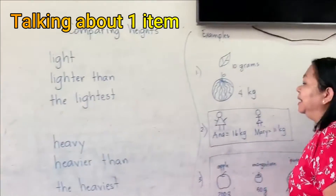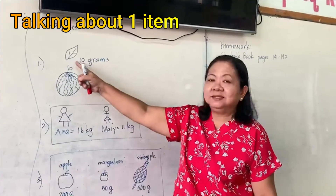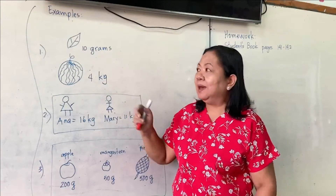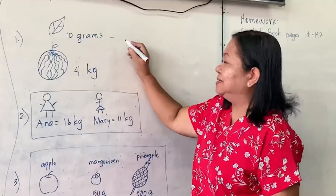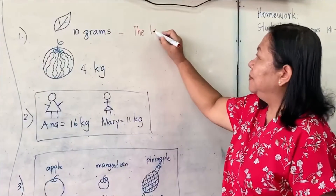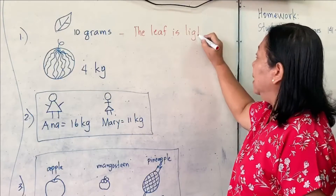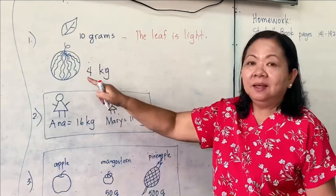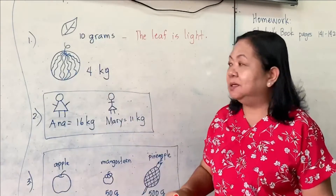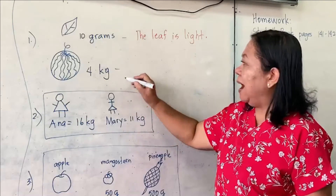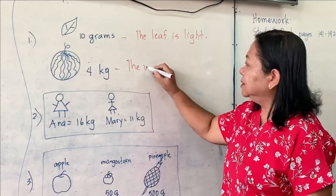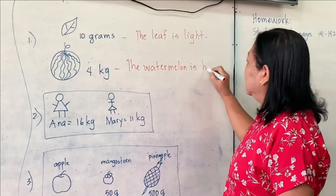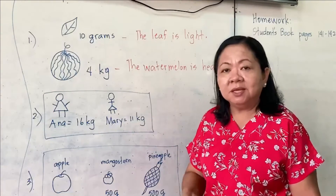Now I have some examples. This is a leaf. The weight or mass of the leaf is 10 grams, so we can say the leaf is light. And this is a watermelon. The weight is 4 kilograms, so the watermelon is heavy.